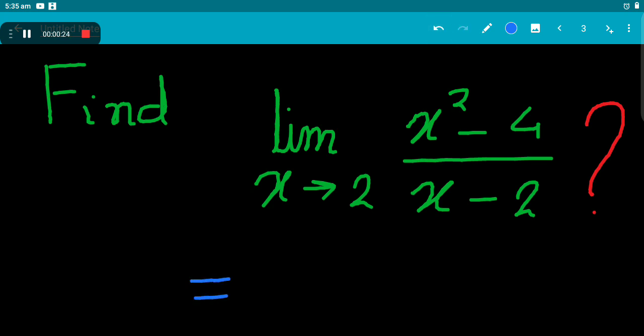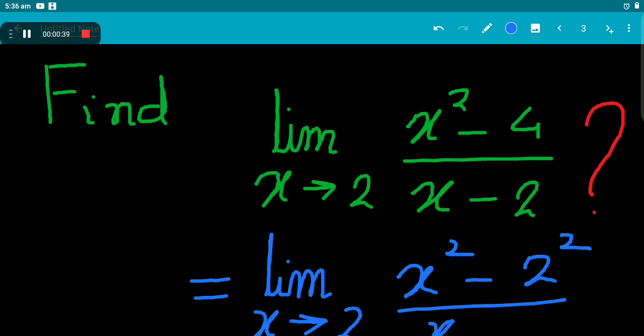What can we do? Let's factorize the numerator. So we have limit x tends to 2. The numerator can be written as x² - 2² divided by x - 2.